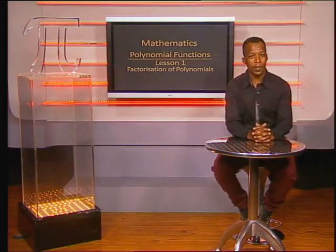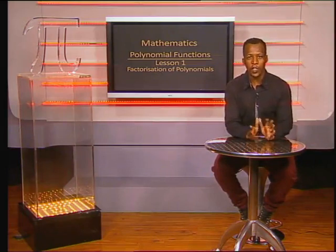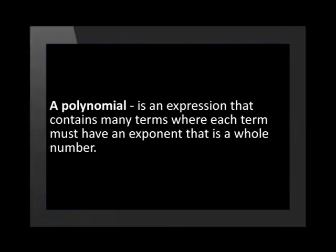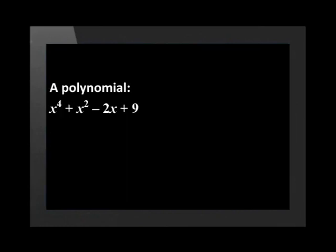Hello, Grade Twelves, and welcome to this lesson on factorization of polynomials. We'll focus mostly on cubic polynomials. A polynomial is defined as an expression that contains many terms where each term must have an exponent that is a whole number. For example, x to the exponent 4 plus x squared minus 2x plus 9 is a polynomial because all exponents are whole numbers and none is negative.